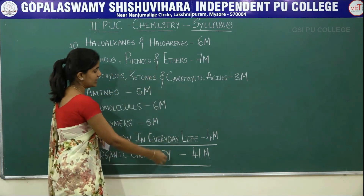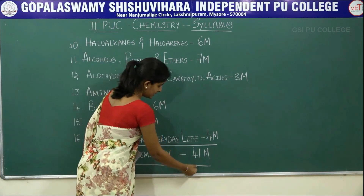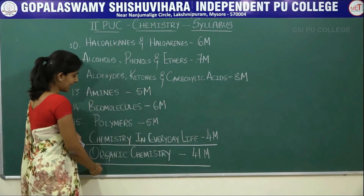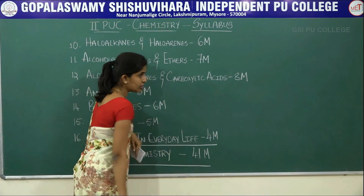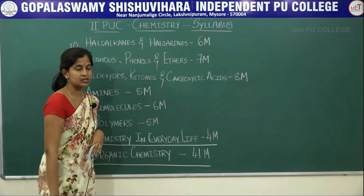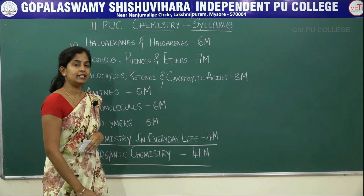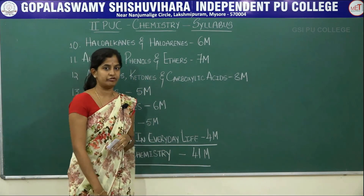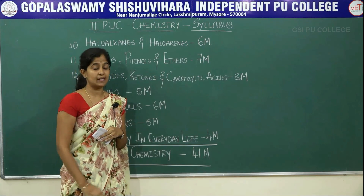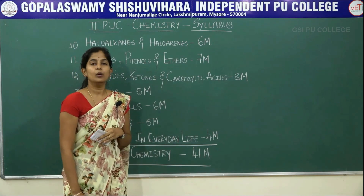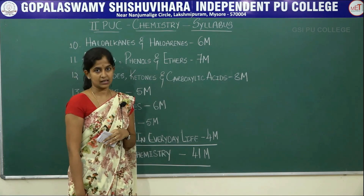The total branch weightage for organic chemistry is 41 marks. Finally, the total weightage of all the chapters combined sums up to 105 marks.